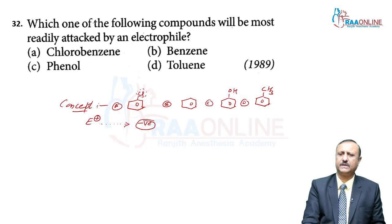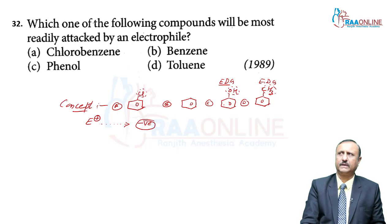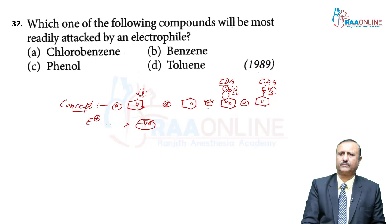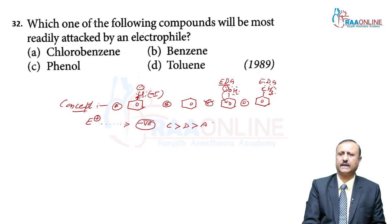The OH group in phenol is an electron-donating group — it increases activity of the benzene ring by donating lone pairs into the ring. Toluene's methyl group also donates electrons (+I effect). Chlorine has a negative inductive effect that decreases ring activity. The order of reactivity toward electrophiles: phenol (C) > toluene (D) > chlorobenzene (A) > benzene (B).